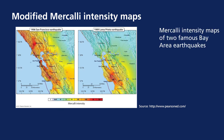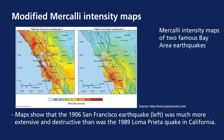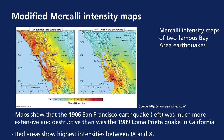Modified Mercalli intensity maps show the intensity of shaking not just in one area but across a very large region. The stars on the maps indicate the epicenter. The first map shows the 1906 San Francisco earthquake — very intense, not just locally but regionally. The second shows the 1989 Loma Prieta earthquake, just south of San Francisco. The red area indicates the highest intensity, between 9 and 10 on the modified Mercalli intensity scale.